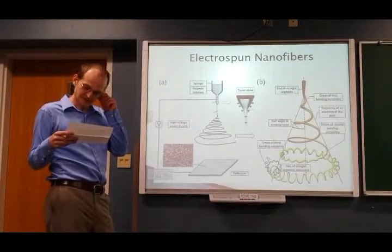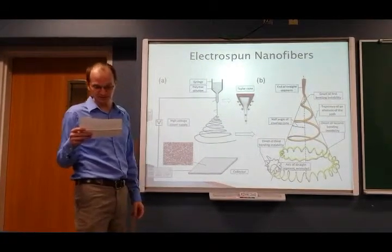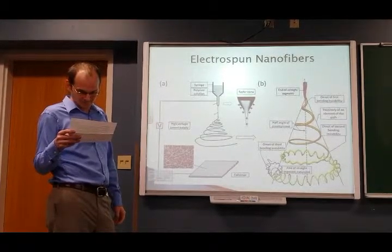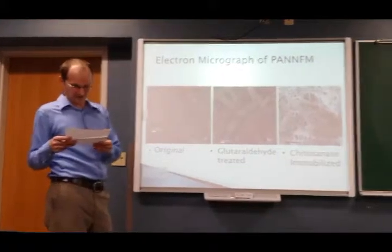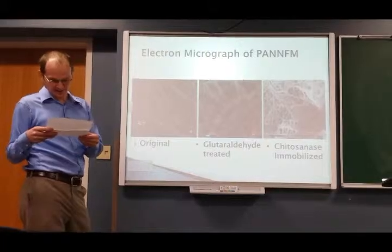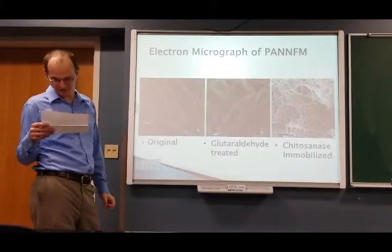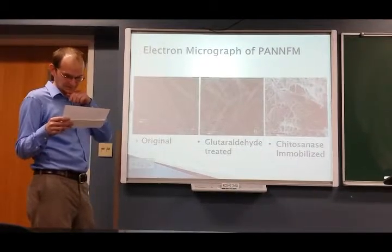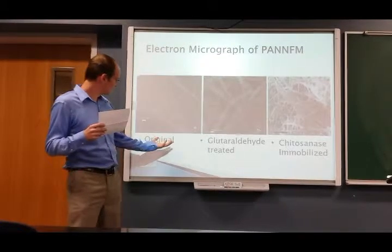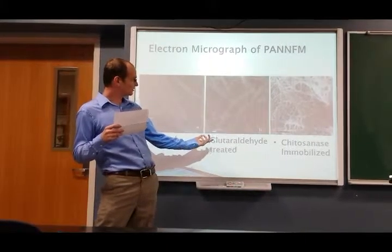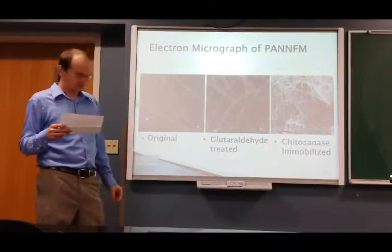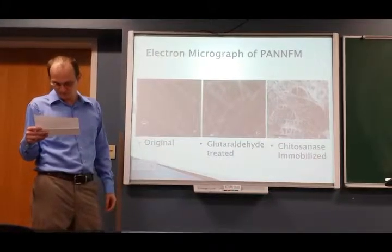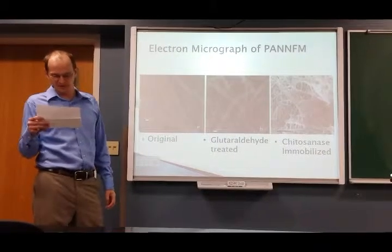The properties of the fibers are controlled by changing either the solution concentration, changing the voltage, or changing the flow rate from the electrospinner. Reactive functional groups can be added to the backbone in order to enable catalyzation. The surface provides a miniature environment where the enzyme activity takes place. Here you can see the original nanofibers, then the solution is applied, and then the enzymes are added to it. Afterwards, they can also be removed and reused. The idea is to mimic a natural environment where living cells reside.